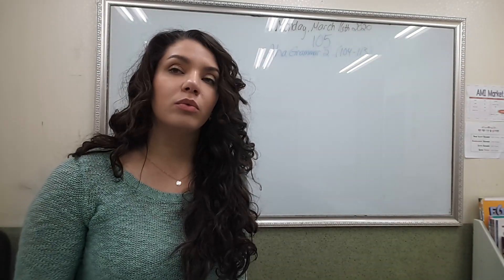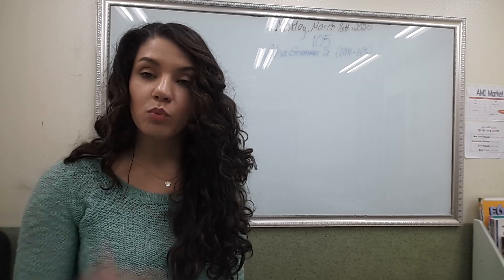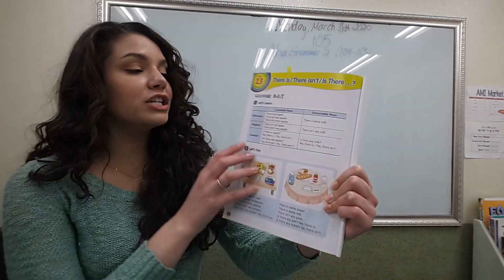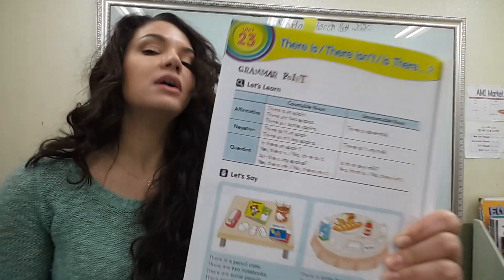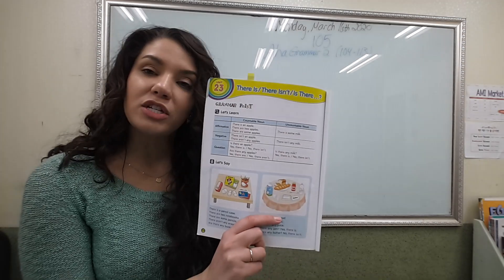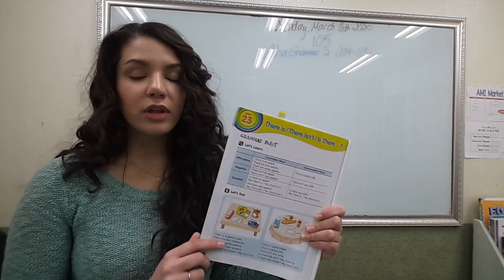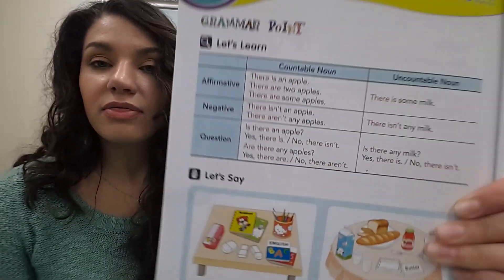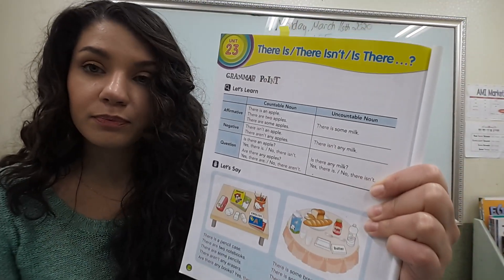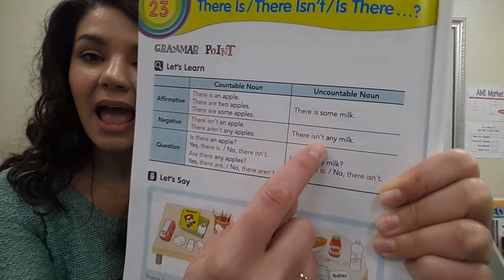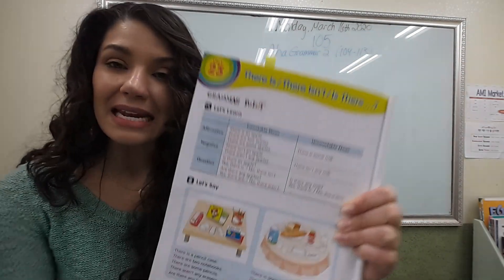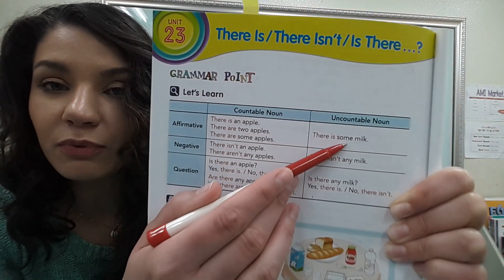If I say 'is there an apple,' you will say 'no, there isn't an apple.' For more than one: 'there aren't any apples.' If I say 'do we have any apples,' you say 'no, there aren't any apples.' Are there any apples in the refrigerator? No, there aren't any apples in the refrigerator. For something like milk that we can't count: 'is there any milk in the refrigerator?' — 'there isn't any milk.' The word 'any' is important; we have to say 'any' in the negative just like we say 'some' in the affirmative.